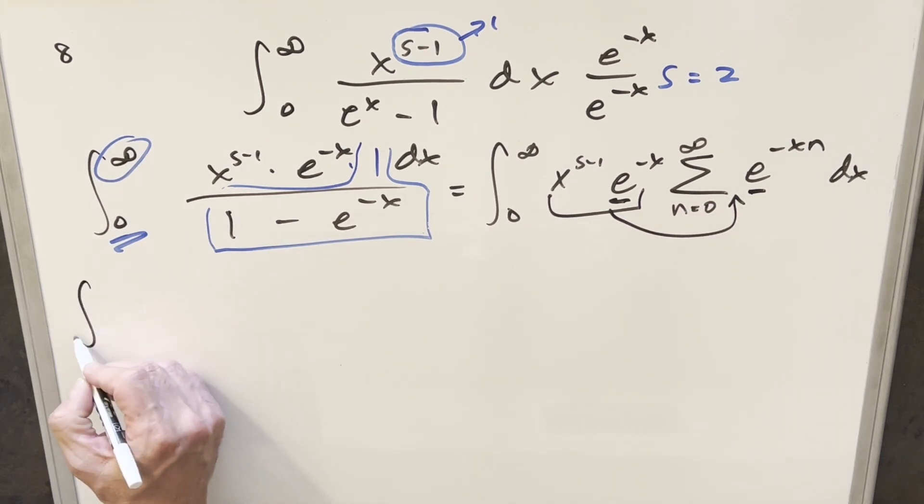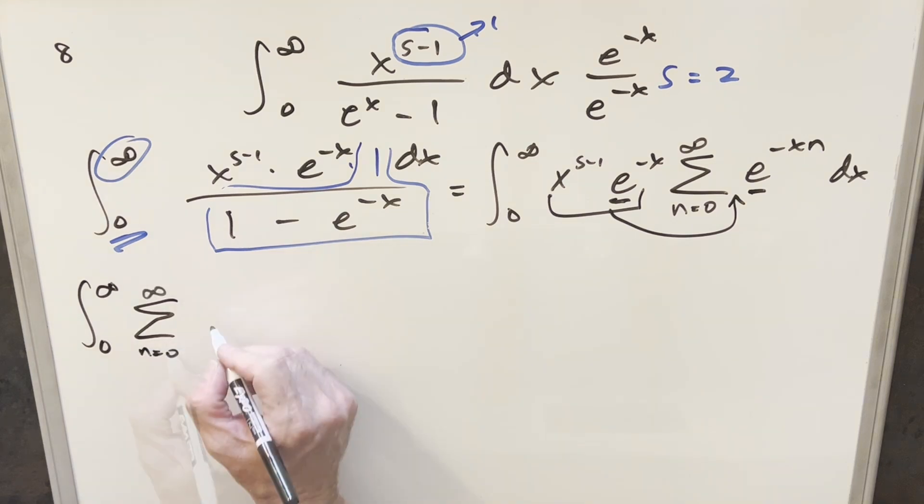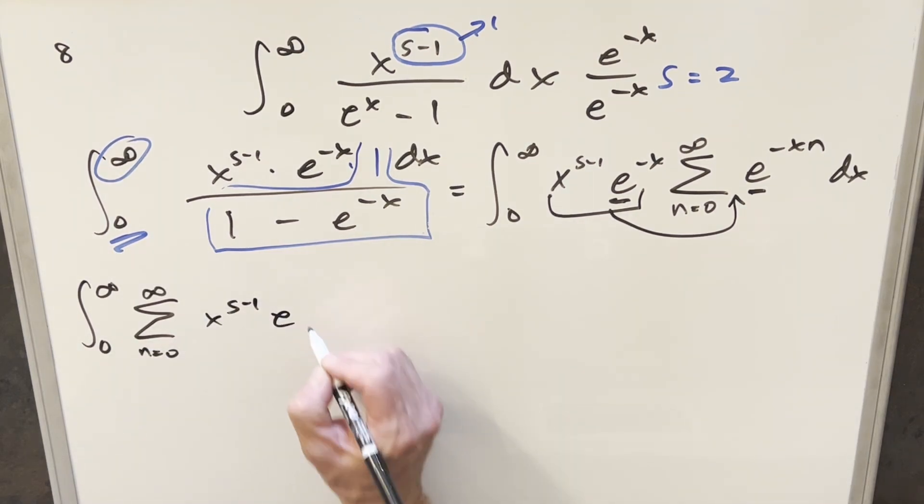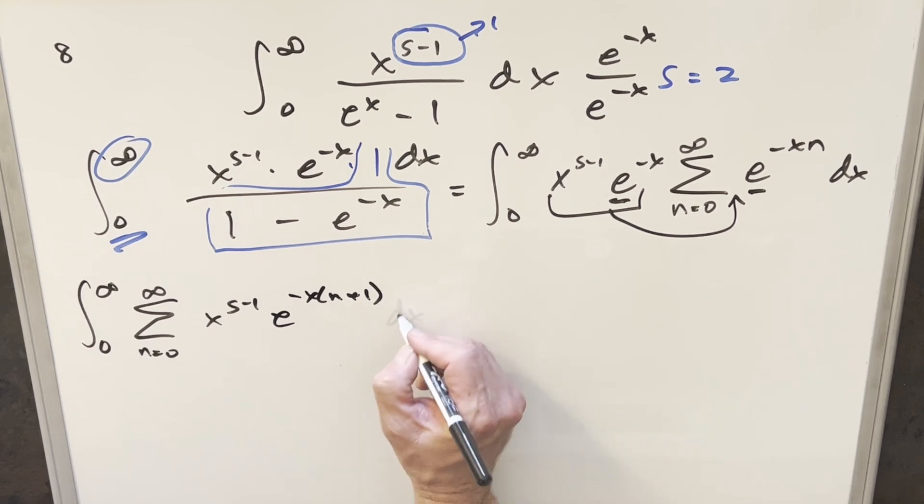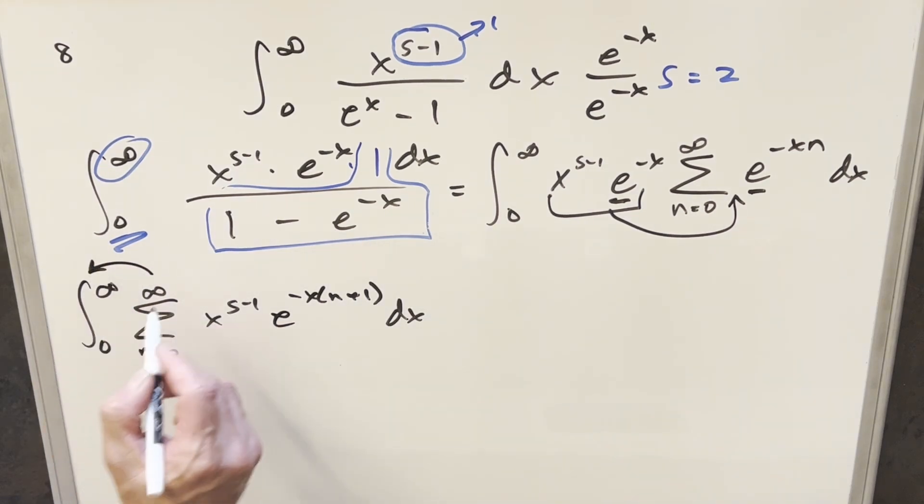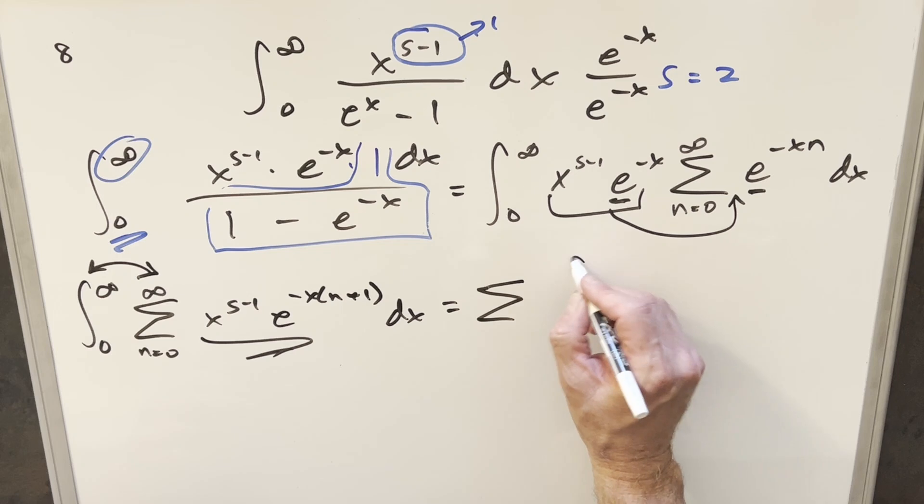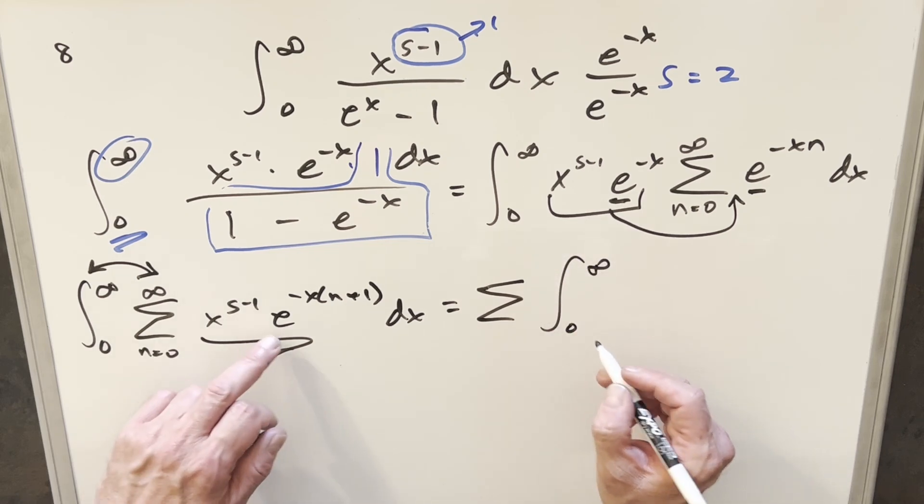So rewriting this, now we're going to have everything inside of our sum. We'll have the x to the s minus 1. And then we multiply the terms with the e as the base in common. And then when we multiply this together, I can kind of factor out minus x, and then we'll have this times n plus 1. And then from here, I can just swap the sum with the integral. And then that's going to be pretty helpful because then this is going to be an integral we can do.